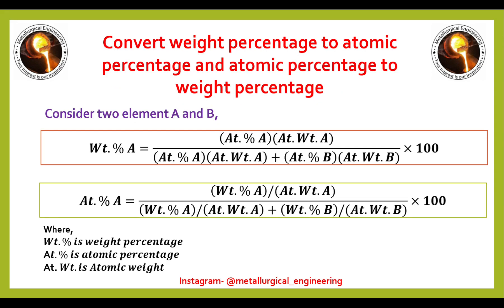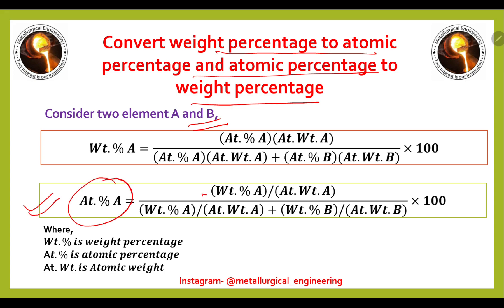This is the fundamental formula for converting weight percent to atomic percent and atomic percent to weight percent, considering two elements A and B. To convert atomic percent to weight percent: weight percent of element A = (atomic percent of A × atomic weight of A) / (atomic percent of A × atomic weight of A + atomic percent of B × atomic weight of B).